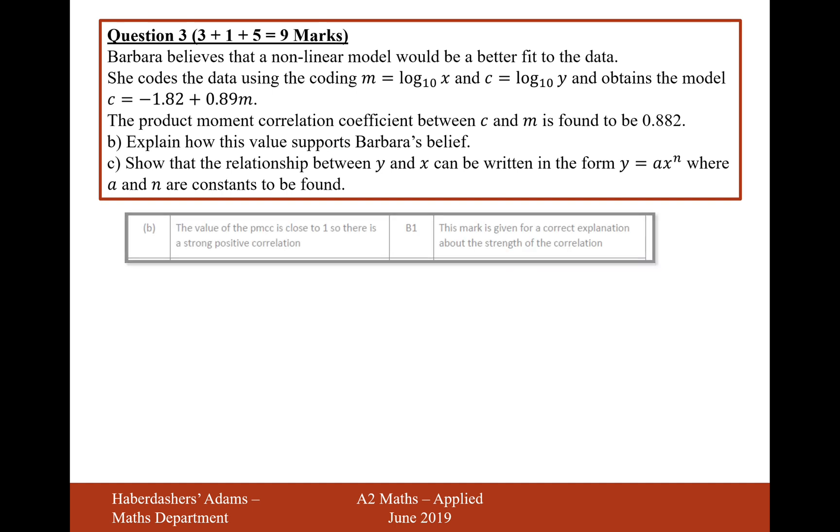Explain how this value supports Barbara's belief. Well, it's just exactly what I've said there. If we go to the formula booklet, it says the value of PMCC is closer to 1, so there is strong positive correlation. So one mark for your explanation about the strength of the correlation.